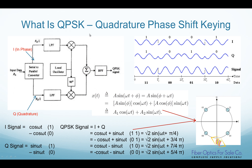Quadrature Phase Shift Keying uses the quadrature concept, since it uses both sine and cosine waves to represent digital data. QPSK is basically two BPSK used in parallel. Since each BPSK transmits one bit of data per symbol rate, QPSK transmits two bits of data per symbol rate.